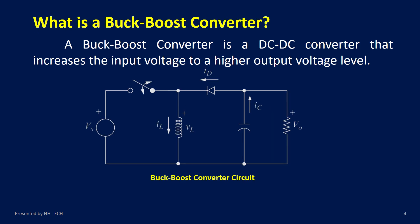A buck-boost converter is a type of DC-DC converter that can either increase or decrease the DC voltage. Unlike a simple boost or buck converter, the buck-boost configuration gives flexibility, as the output voltage can be higher or lower than the input depending on the duty ratio. At the heart of the circuit are four main components: an inductor, a capacitor, a diode, and a switch — usually a MOSFET or IGBT depending on the application and power levels.